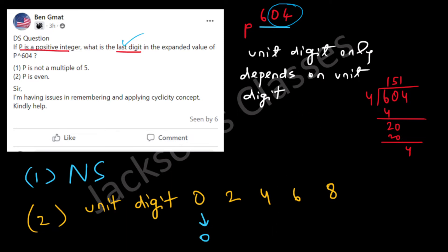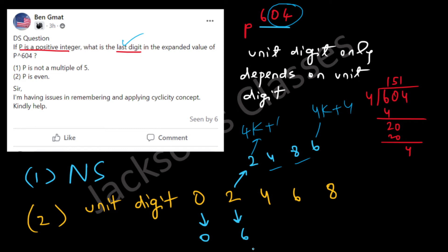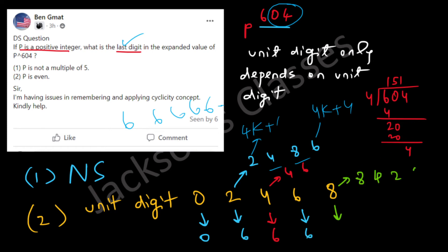The power cycle of 2 is 2, 4, 8, 6. Since 604 is of the form 4k+4, the unit digit for a base ending in 2 is 6. For a base ending in 4, the cycle is 4, 6 — again giving 6. For a base ending in 6, the unit digit is always 6. For a base ending in 8, the cycle is 8, 4, 2, 6 — again giving 6.